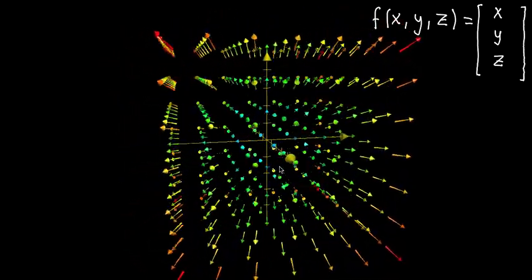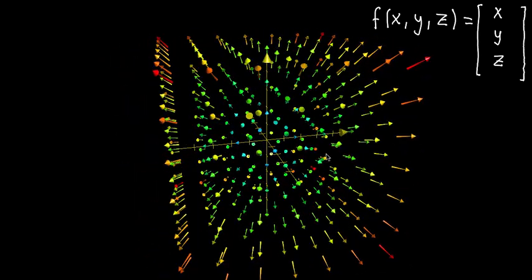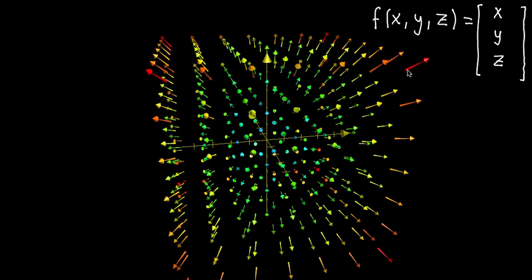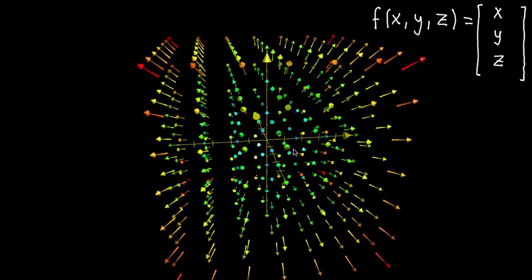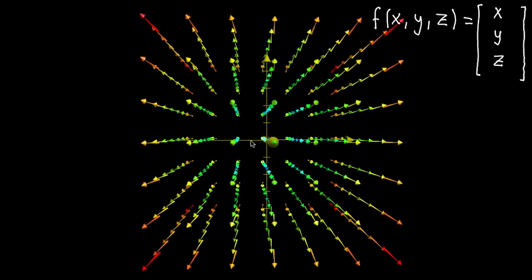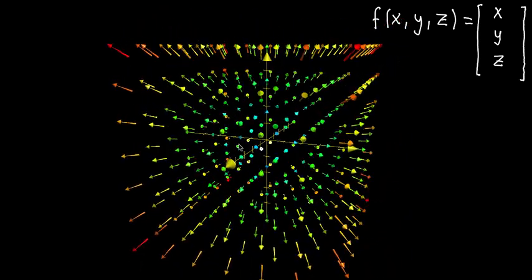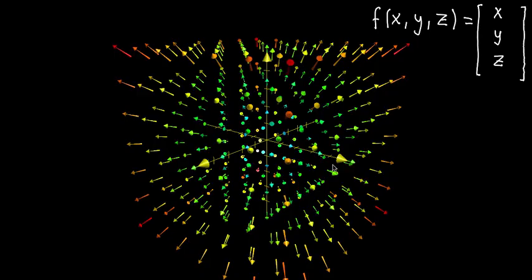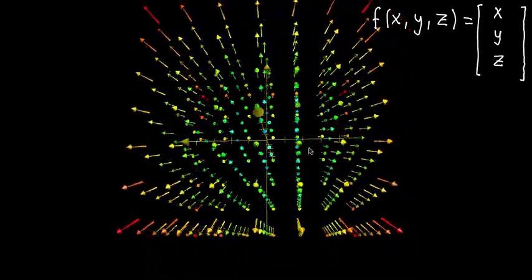So again, you kind of lie when you draw these. Like the vectors, these red guys that are out at the end, they should be really long. Because this vector should be as long as that point is away from the origin. But to give a cleaner vector field, you scale things down. And notice the blue ones that are close to the center here are actually really, really short guys.